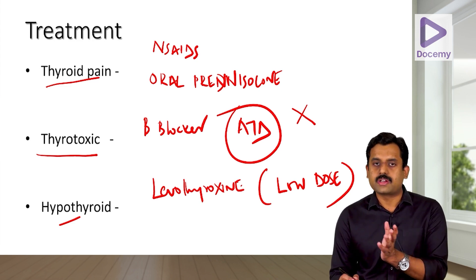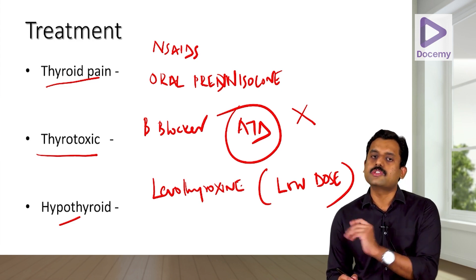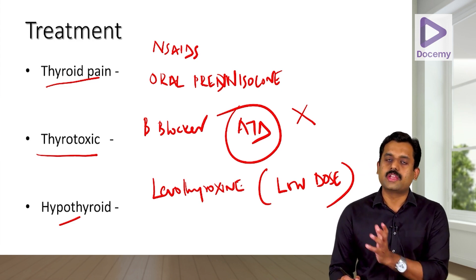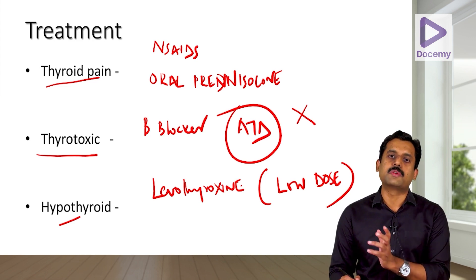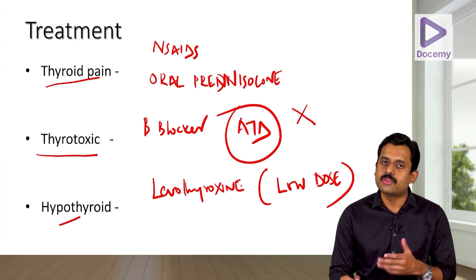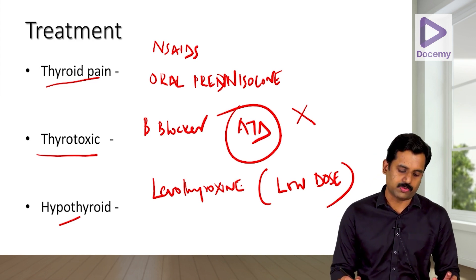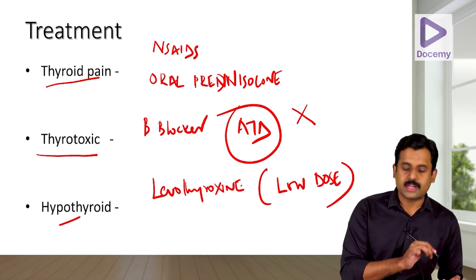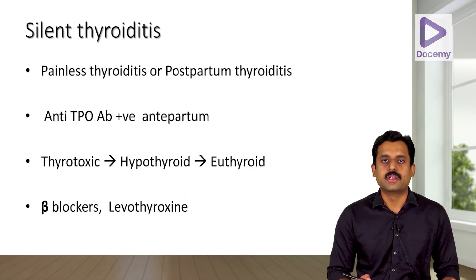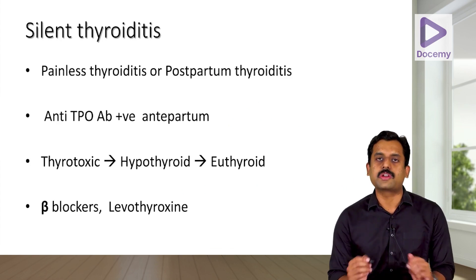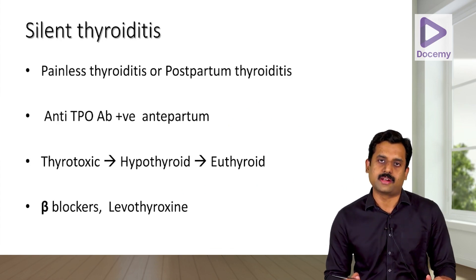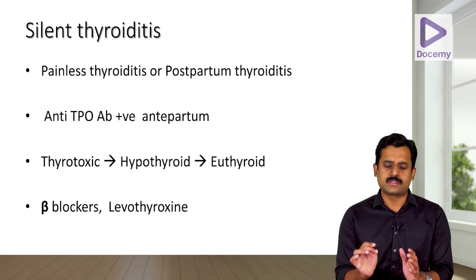With close follow-up, the patient will eventually recover and become euthyroid, at which point levothyroxine can be stopped. That covers de Quervain's thyroiditis. Now we will see what silent thyroiditis is.